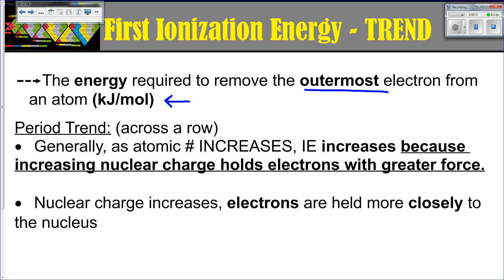If you think about it in reference to the periods, if you're moving across a period, as your atomic number increases — and remember if your atomic number is increasing, your number of protons is increasing — therefore your Z-effective nuclear charge is also increasing.